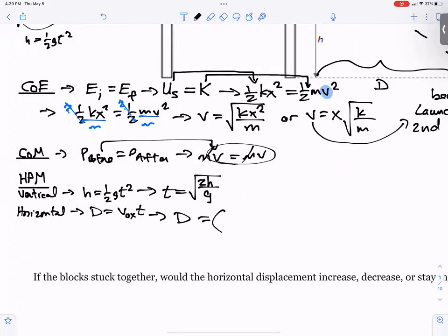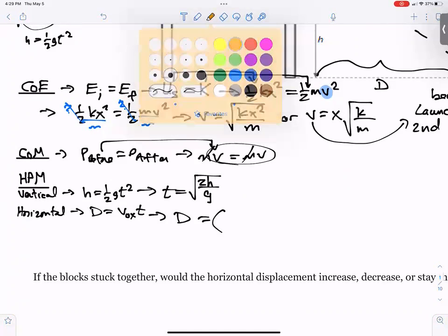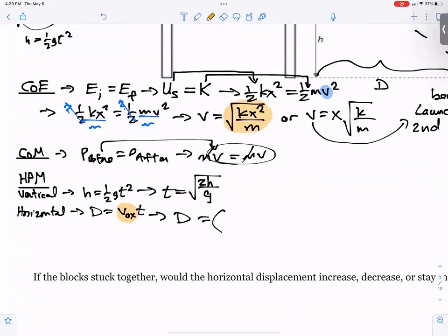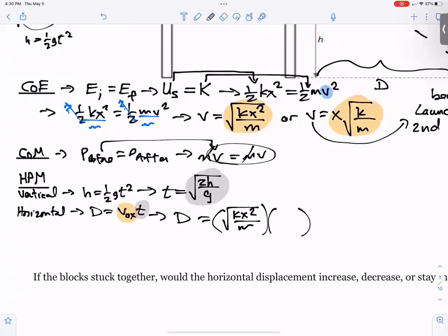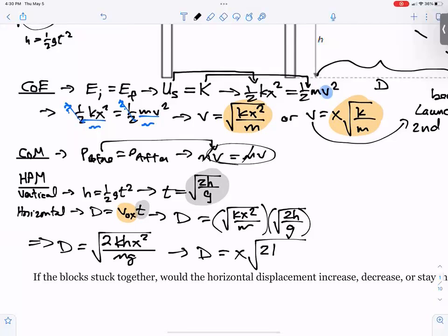So distance would equal, you're going to substitute for two things. We're going to substitute for v naught x and for t. So I'm going to choose the first one, square root of k x squared over m. And then you have to substitute for t, which is the square root of 2h over g. So you just have to make two substitutions. So the horizontal displacement is going to be the square root of, and we've got to put that all together on the top there, 2k h x squared over m g. Now you can leave it like that if you want to. I'm going to go ahead and pop out an x there. Distance equals x times the square root of 2k h over m g.